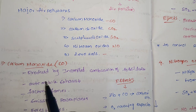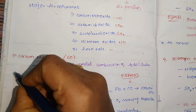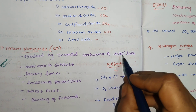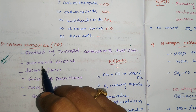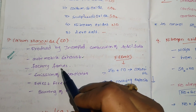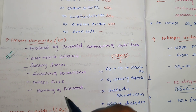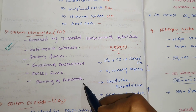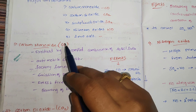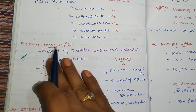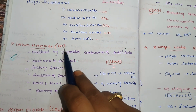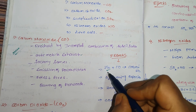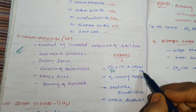First of all, carbon monoxide. The source of this pollutant: it is produced by the incomplete combustion of fossil fuels and also from automobile exhaust from vehicles, factory flames, emission of power plants, forest fires, and burning of firewood. These are the sources of carbon monoxide. Carbon monoxide affects humans — it binds to the hemoglobin of RBCs and forms carboxyhemoglobin.